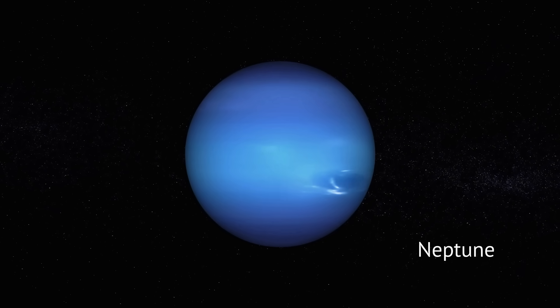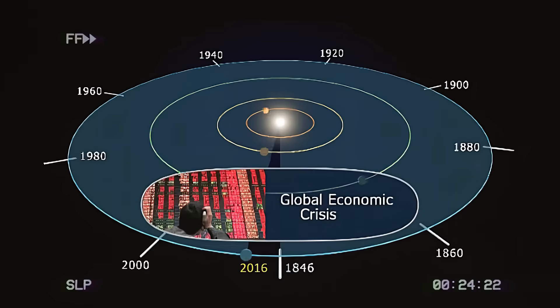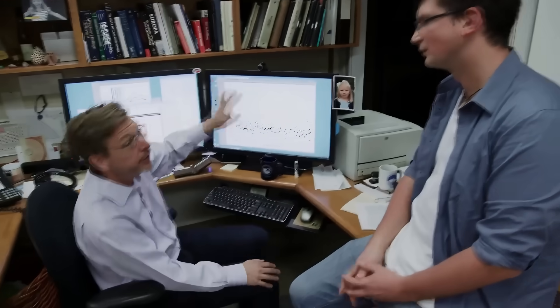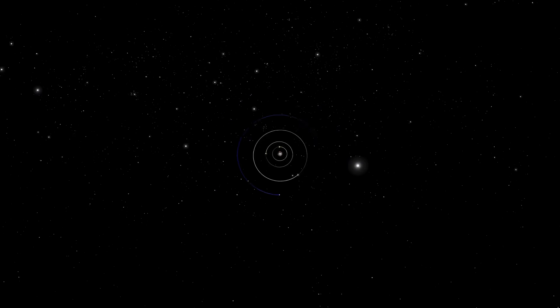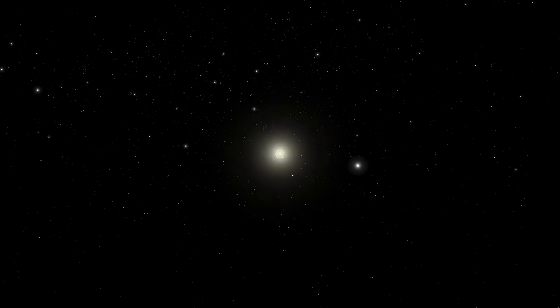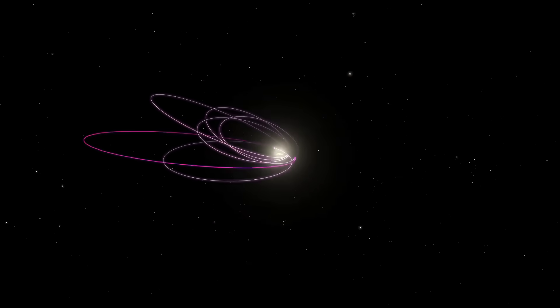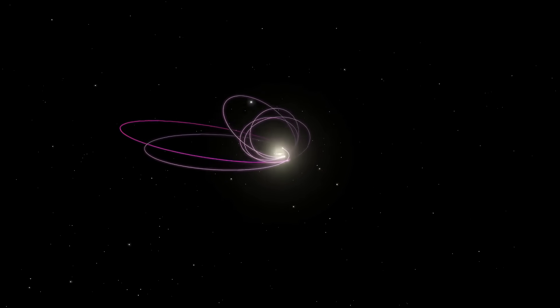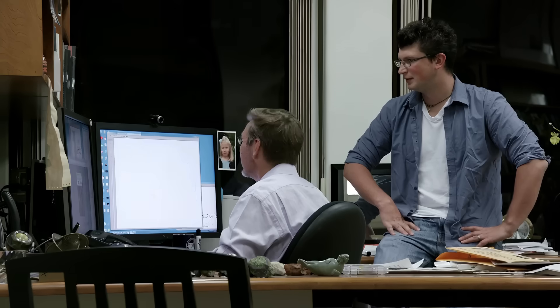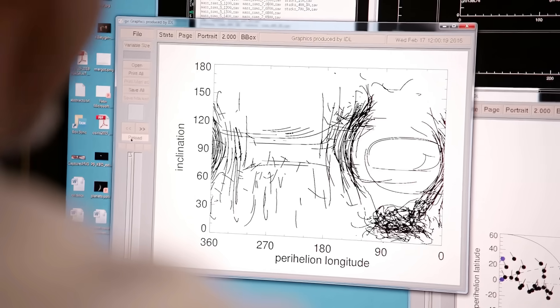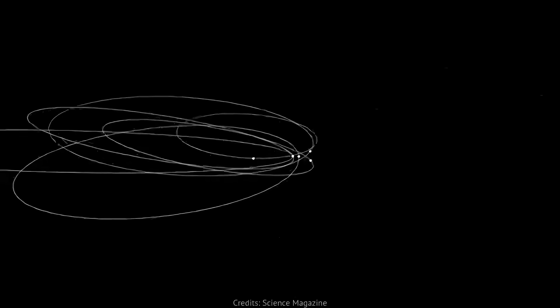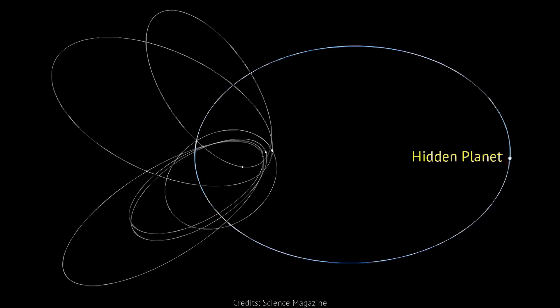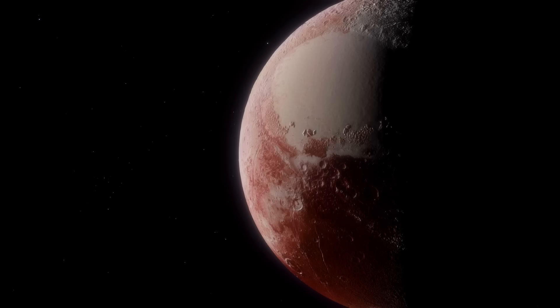Now let's fast forward to 2016. Two scientists, Mike Brown and Konstantin Batygin from Caltech, noticed something strange. They were looking at the orbits of a few distant objects in the Kuiper belt when they noticed a pattern. These orbits weren't random. They were clustered, tilted in the same direction, as if something massive was tugging on them. When Mike and Konstantin followed the data, it led them to a wild possibility. The only thing that could explain the strange orbits of these Kuiper belt objects was a hidden planet, something five to ten times the mass of Earth, far beyond Pluto.